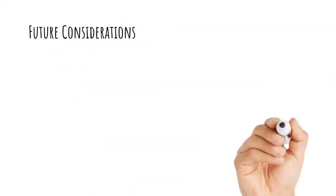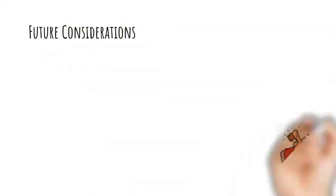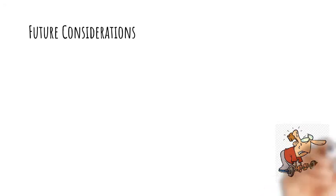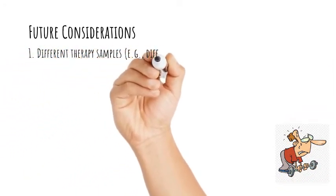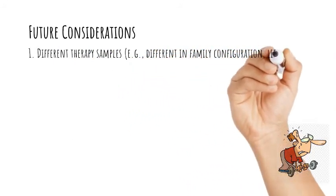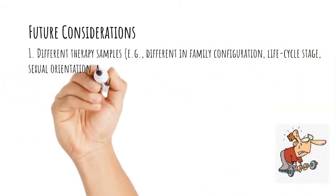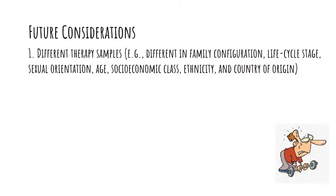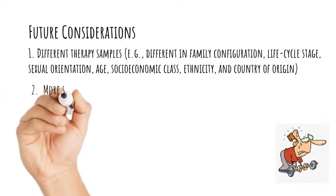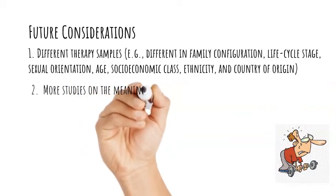Future studies of the clinical utility of the scale with therapy couples could extend this work by using different therapy samples, such as those differing in family configuration, life cycle stage, sexual orientation, age, socioeconomic class, ethnicity, and country of origin. Although many therapeutic outcome studies have used the scale as an assessment measure of couple adjustment or satisfaction, more studies of the meanings of the scale scores should be encouraged.